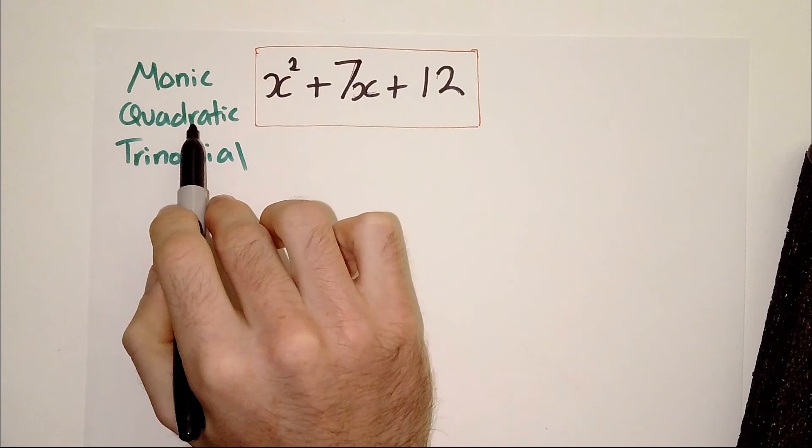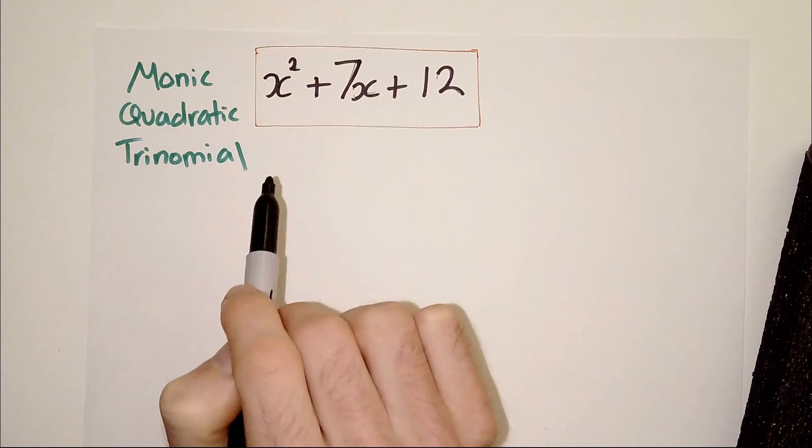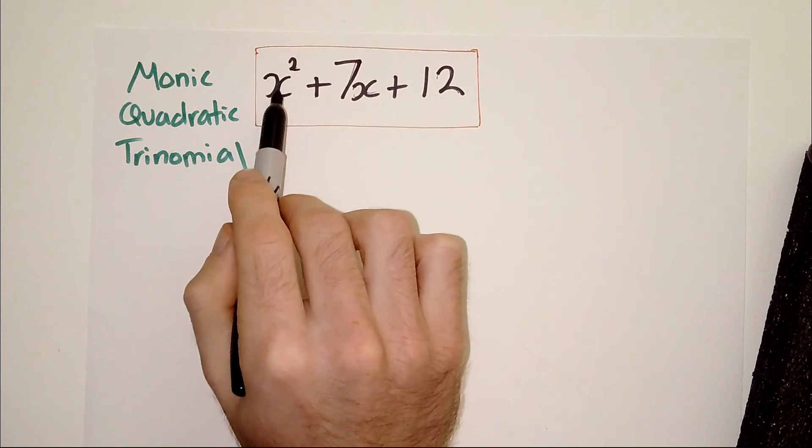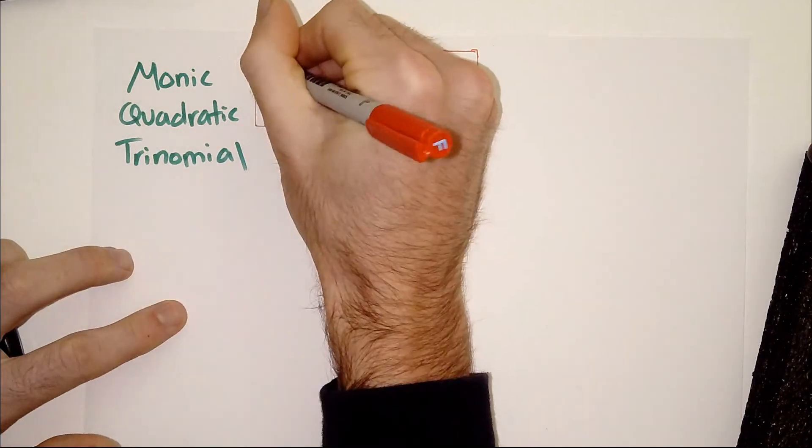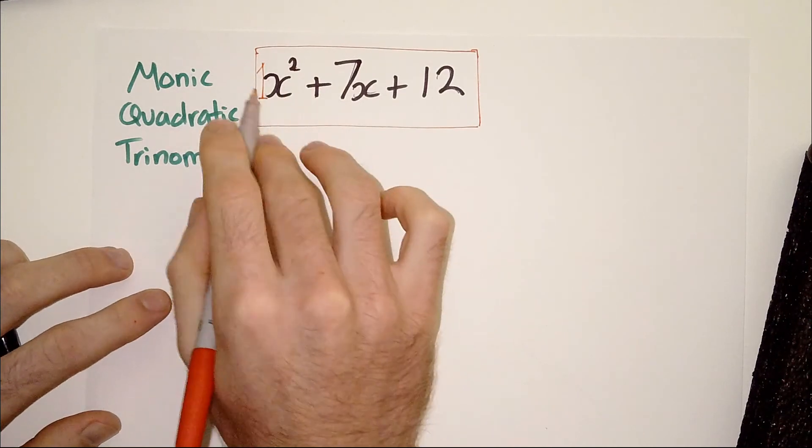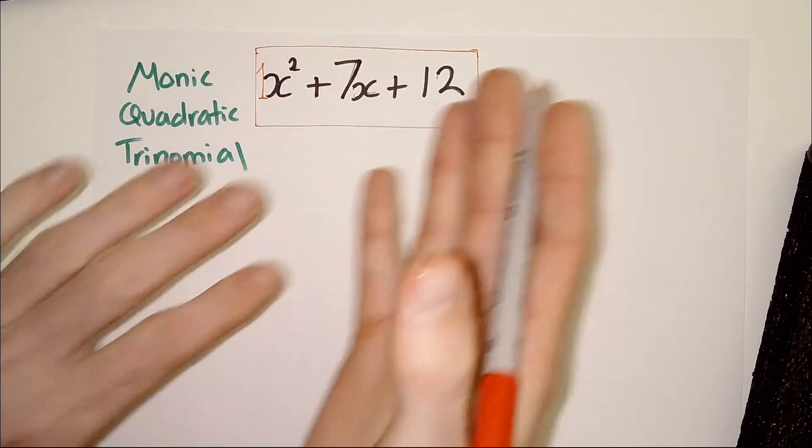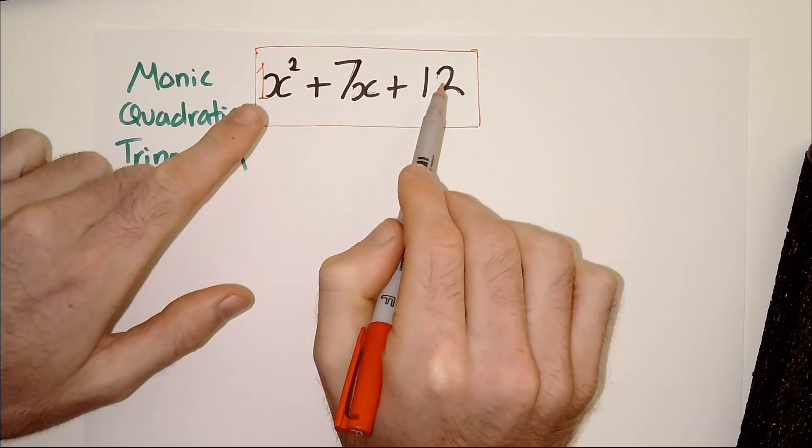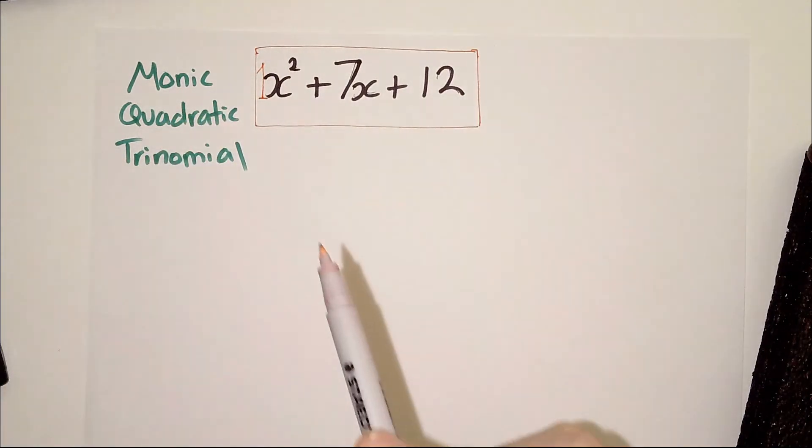What about a monic quadratic? Well, monic simply means that the number in front of the x squared term is 1. Now, you're probably thinking, but there is no number before the x squared term. Well, in maths, when there is a 1 before a term at the start, it is invisible. Okay, so really there is a 1. There is a 1 here before the x squared term. We just don't have to write it. If it was negative 1, you could even write negative x squared without putting negative 1. Now, a monic quadratic is a quadratic that has a 1 before the x squared term.